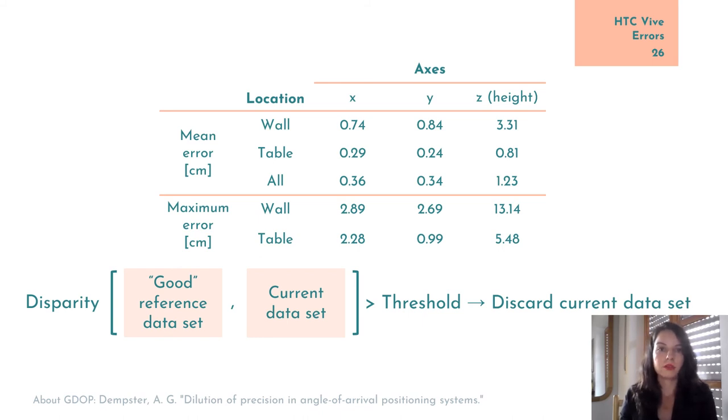All in all, the average HTC Vive errors are at least 10 times smaller than the usual ultrawideband localization errors, so we deem the HTC Vive suitable as a ground-truth system for this application.